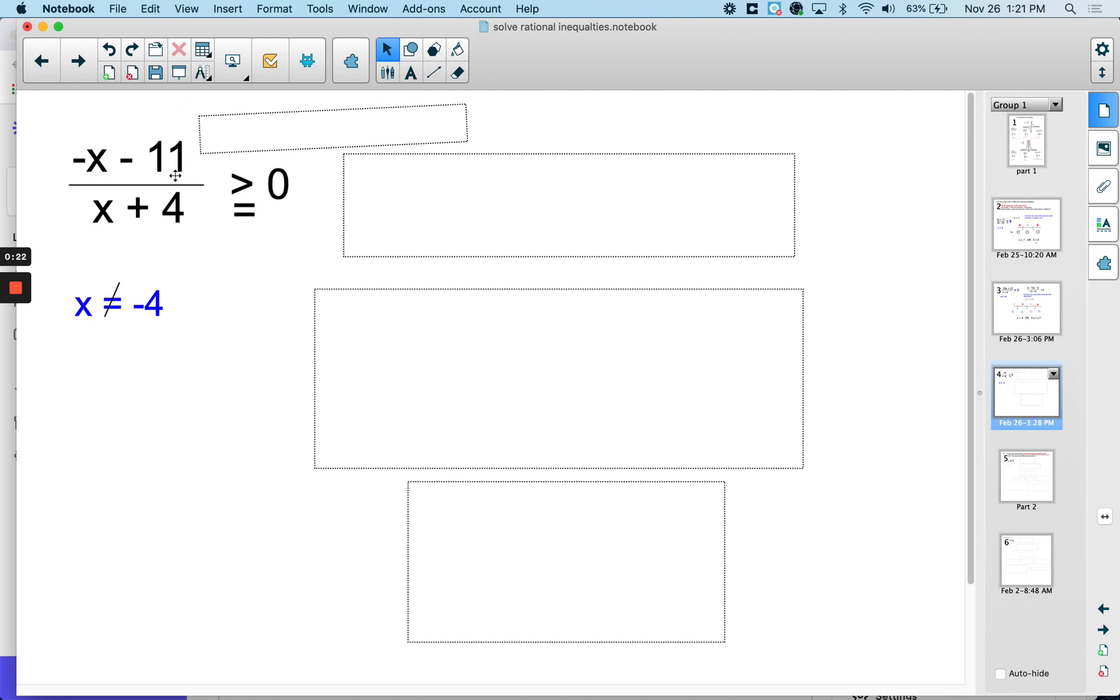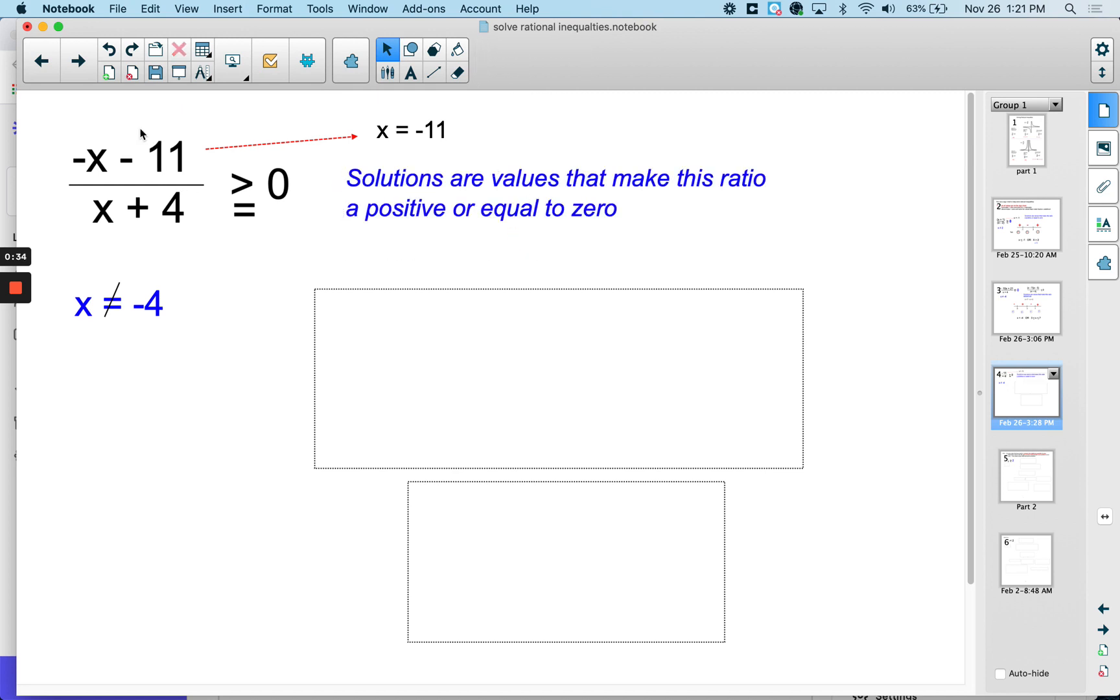So if we take negative x minus 11, set it equal to zero and solve, we would get x equals negative 11. These two will go on the sign chart, and remember we're looking for values, solutions, that would make this ratio equal to zero or positive.